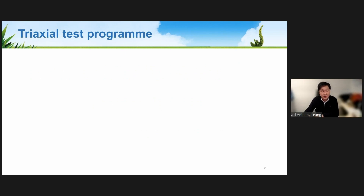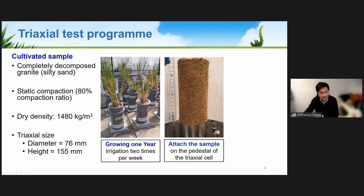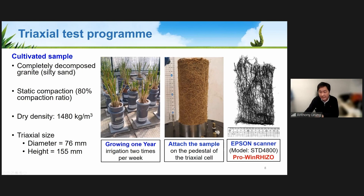We used the triaxial testing system at the Hong Kong University of Science and Technology. The soil used is local completely decomposed granite, which is essentially silty sand, compacted to a degree of compaction of 80%, achieving a dry density suitable for plant growth in urban areas. After testing, we opened samples to examine root distribution using a scanner to better inform our modeling.